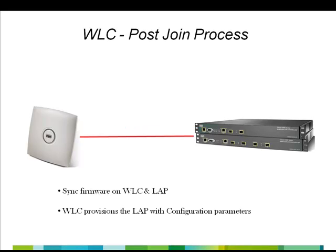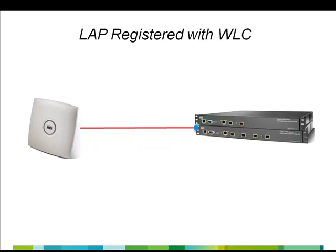We are now in the final step of completing the registration process of the access point with the wireless LAN controller. In the post-join process, the access point downloads firmware from the controller if it's running a code version which does not match the controller. After syncing up the firmware versions, the controller provisions the access point with appropriate SSID, security, QoS, and other parameters that have been configured on the controller. Once this is done, the access point is ready to serve wireless LAN clients, and this completes the registration process.